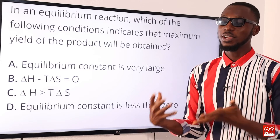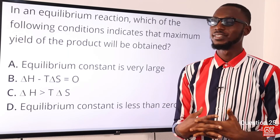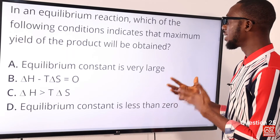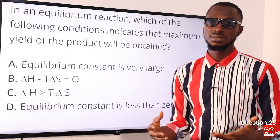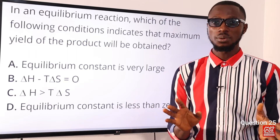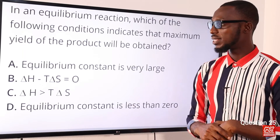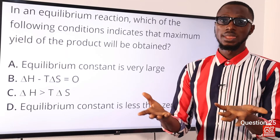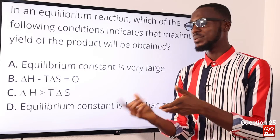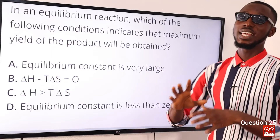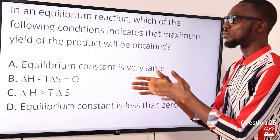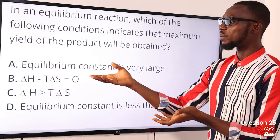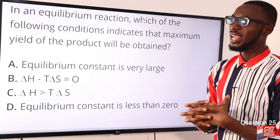Question 25: In an equilibrium reaction, which of the following conditions indicates that maximum yield of products will be obtained? The equilibrium constant Kc shows the relationship between the concentration of products to reactants. When Kc is large — greater than one — the equilibrium favors the product side. The correct option is option A: the equilibrium constant is very large.